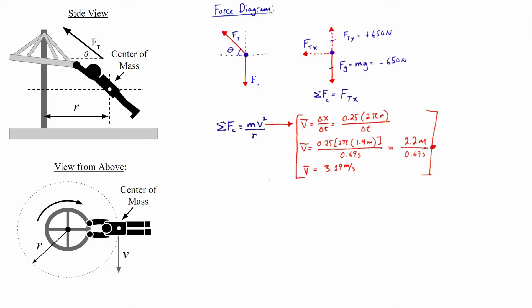Let's plug in the values: 65 kilograms times 3.19 meters per second squared, divided by a radius of curvature of 1.4 meters. We calculate that to be about 472 newtons. So the sum of the forces on me must have been about 472 newtons, which is the same size as the x component of tension.